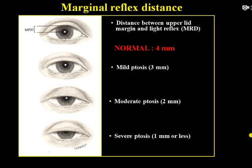Now for the clinical evaluation. The first sign to look for is marginal reflex distance, also known as MRD. It is the distance between the upper eyelid margin and the corneal light reflex, obtained by placing a torch in front of the patient and observing the central reflection from the cornea. The normal value is 4 mm.